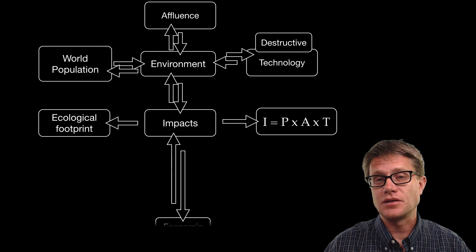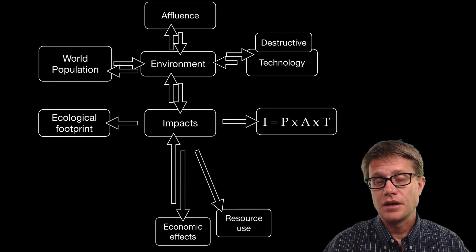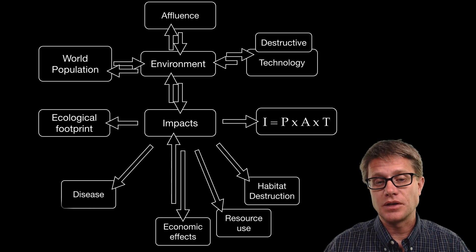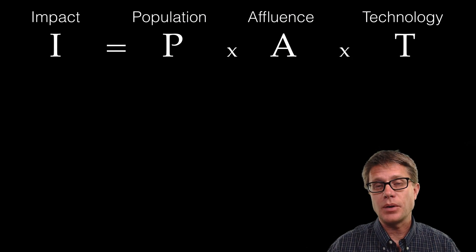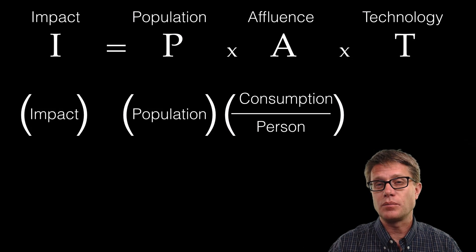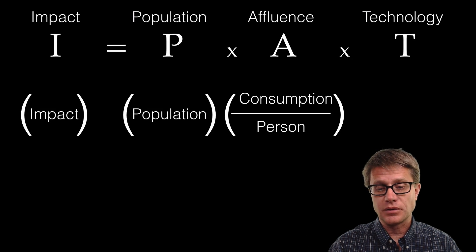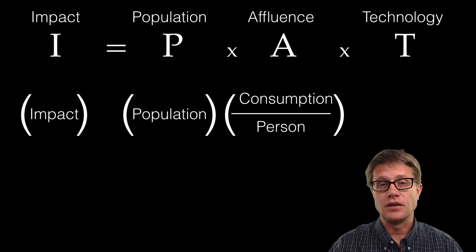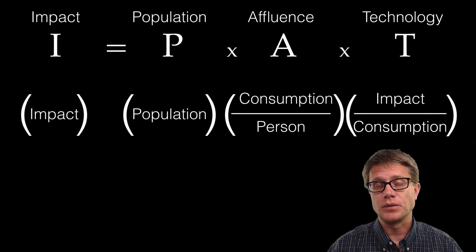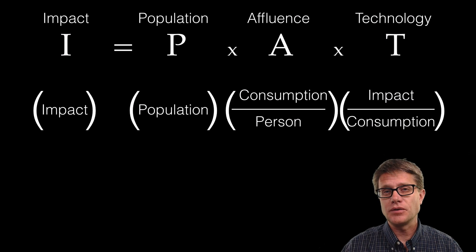Another big factor aside from population is the economy. If the economy grows too much, that is going to consume resources and destroy habitat. But if the economy is not big enough in certain countries, it can lead to disease and hunger. The IPAT equation is pretty straightforward: on the left side we have the impact. We then have the population — the bigger the population, the larger the impact. Affluence is consumption per person, and then we ask whether that consumption is actually harming the environment, which depends on the technology used.